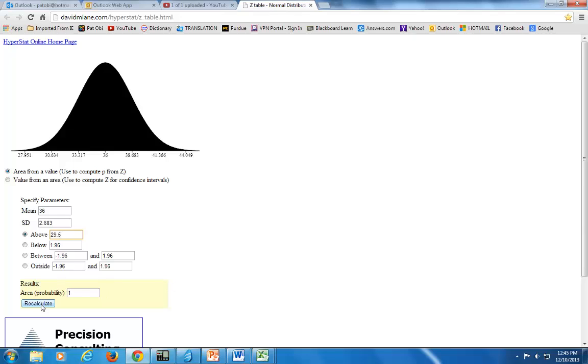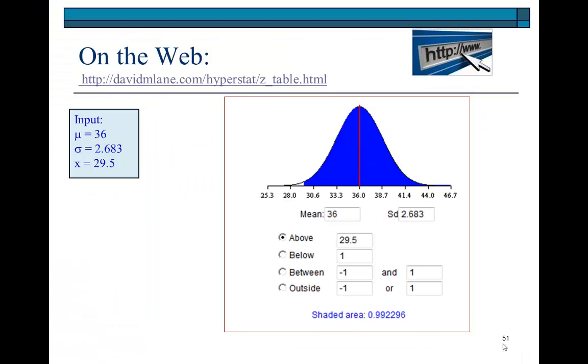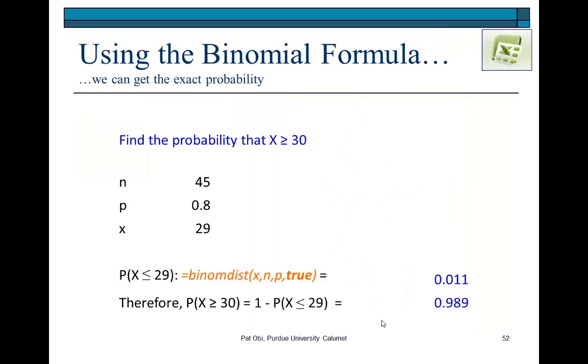And then recalculate, and that's it. That's your answer right here, 0.9923. So, that means that the probability that we're going to have 30 or more non-defective boxes is a pretty high one. All right? There's a 99, approximately 99% chance of accomplishing that.